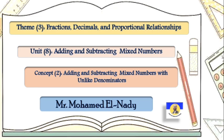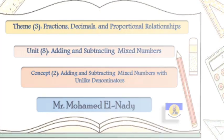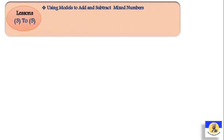Adding and subtracting mixed numbers with unlike denominators. How can we do adding and subtracting between two fractions or mixed numbers with unlike denominators? They need like denominators when adding or subtracting. We studied this in lessons three, four, and five.